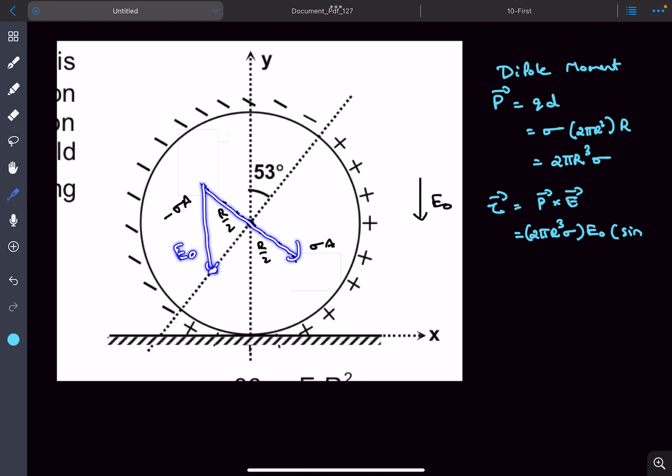For the magnitude, it's given that this angle is 53°, so the other angle is 37° because if a line makes 53° with the vertical, the normal to that line makes 37° with the vertical.